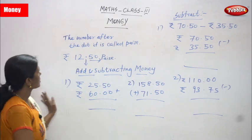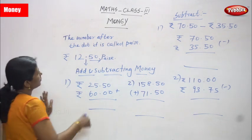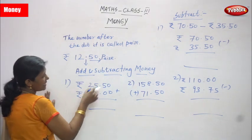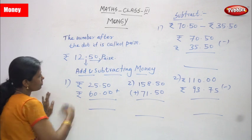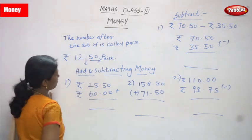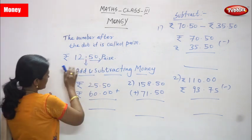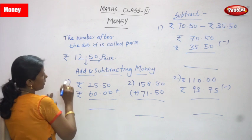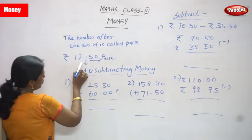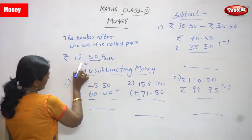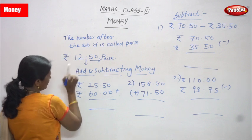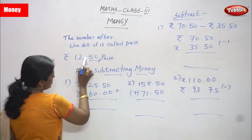Now we are going to see money again, but it's adding and subtracting money. So before that, we are going to see the number after the dot. The number after the dot is called paise. For example, 12 rupees 50 paise — the 12 is rupees, so you have to write the rupees symbol in front of the number.